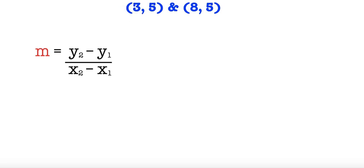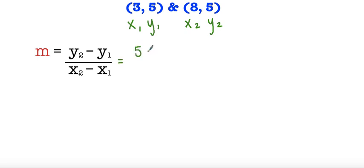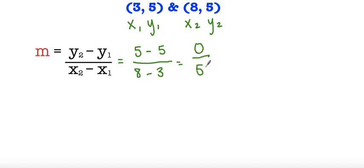So here we have another coordinate and we're going to do the same thing. First we label our coordinates: x sub 1, y sub 1, x sub 2, and y sub 2. Then we substitute: 5 minus 5 divided by 8 minus 3. So 5 minus 5 is 0, and 8 minus 3 is 5. Zero divided by 5 is just 0, so our slope in this case is 0.